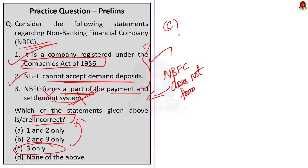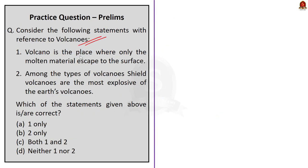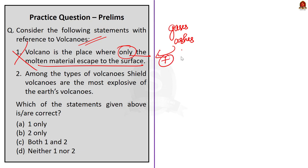Before moving on to the next question, I would like to remind you an important point: NBFCs do not form a part of the payment and settlement system and cannot issue checks drawn on themselves. Now let's move on to our last question. It is a two-statement question. The first statement says a volcano is the place where only the molten material escapes to the surface. It is incorrect because a volcano is a place where gases, ashes and also molten rock material — that is lava — escape to the ground. You cannot say only the molten material. So the first statement is wrong.